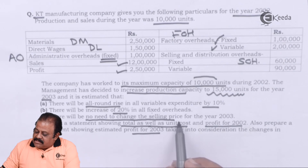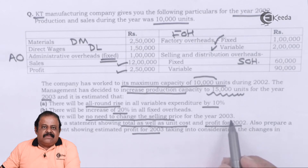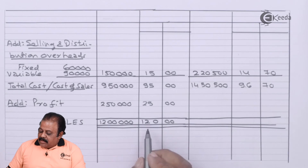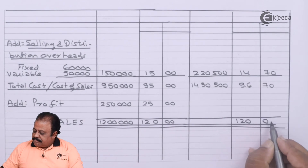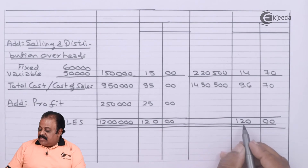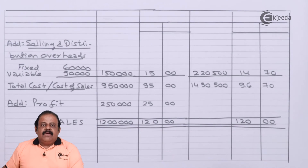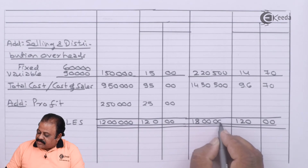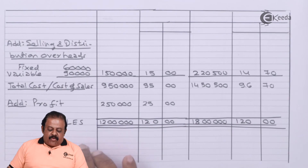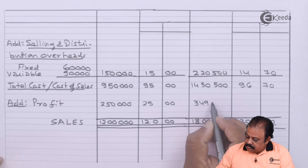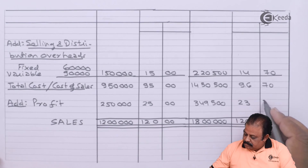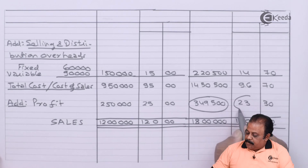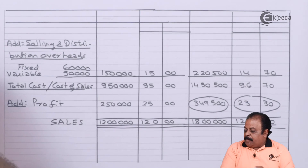There will be no need to change the selling price for 2003, so it remains the same as 2002 at ₹120 per unit. Total sales: ₹120 multiplied by 15,000 units equals ₹18,00,000. Profit: ₹18,00,000 minus ₹14,50,500 equals ₹3,49,500. Per unit profit is ₹23.30.